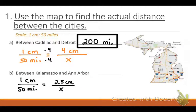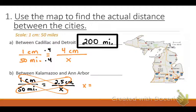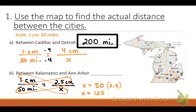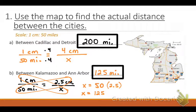If you wanted to, you could do mental math. You could also use cross products. For this example, I'm going to show you it by cross products. What is one centimeter times X? One X, which is just plain old X, equals, and then I've got to multiply 50 times 2.5. What's 50 times 2.5? 125. So going back, what is my answer with units? 125 miles. That is the estimated distance between Kalamazoo and Ann Arbor.